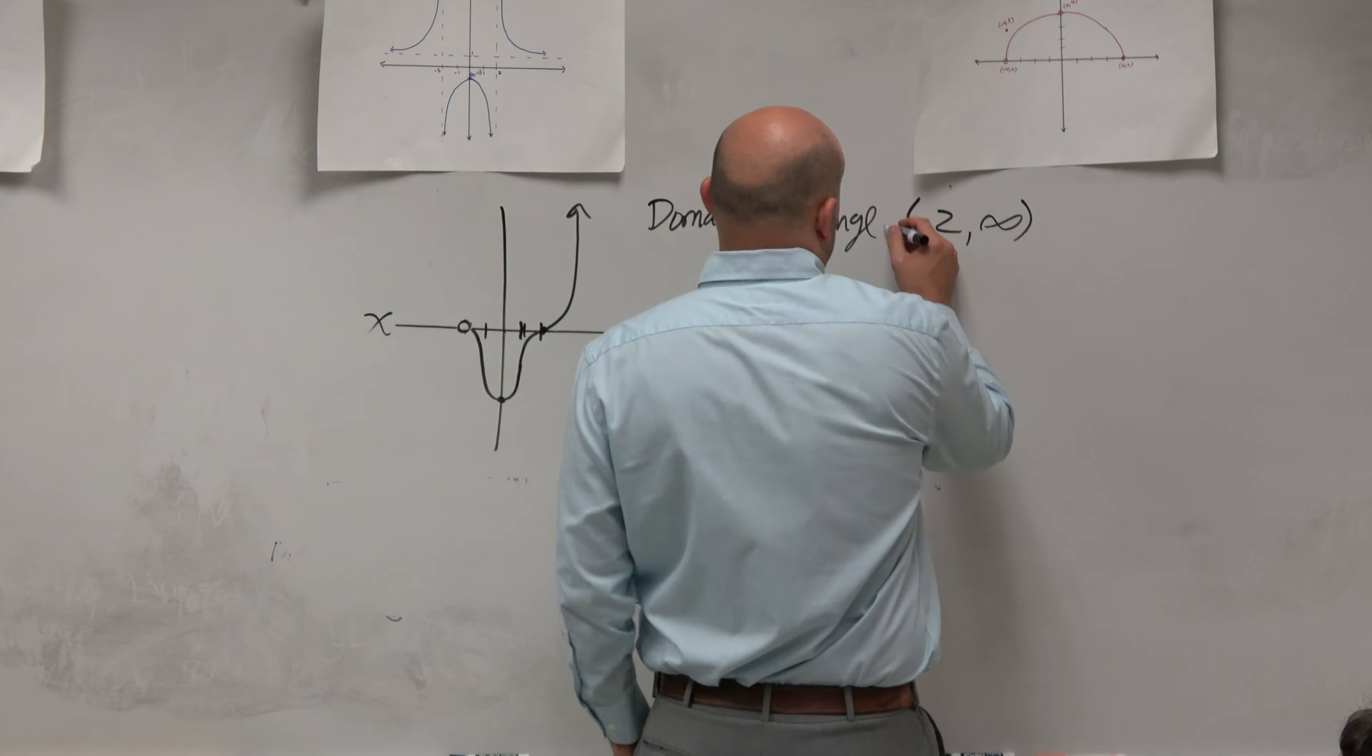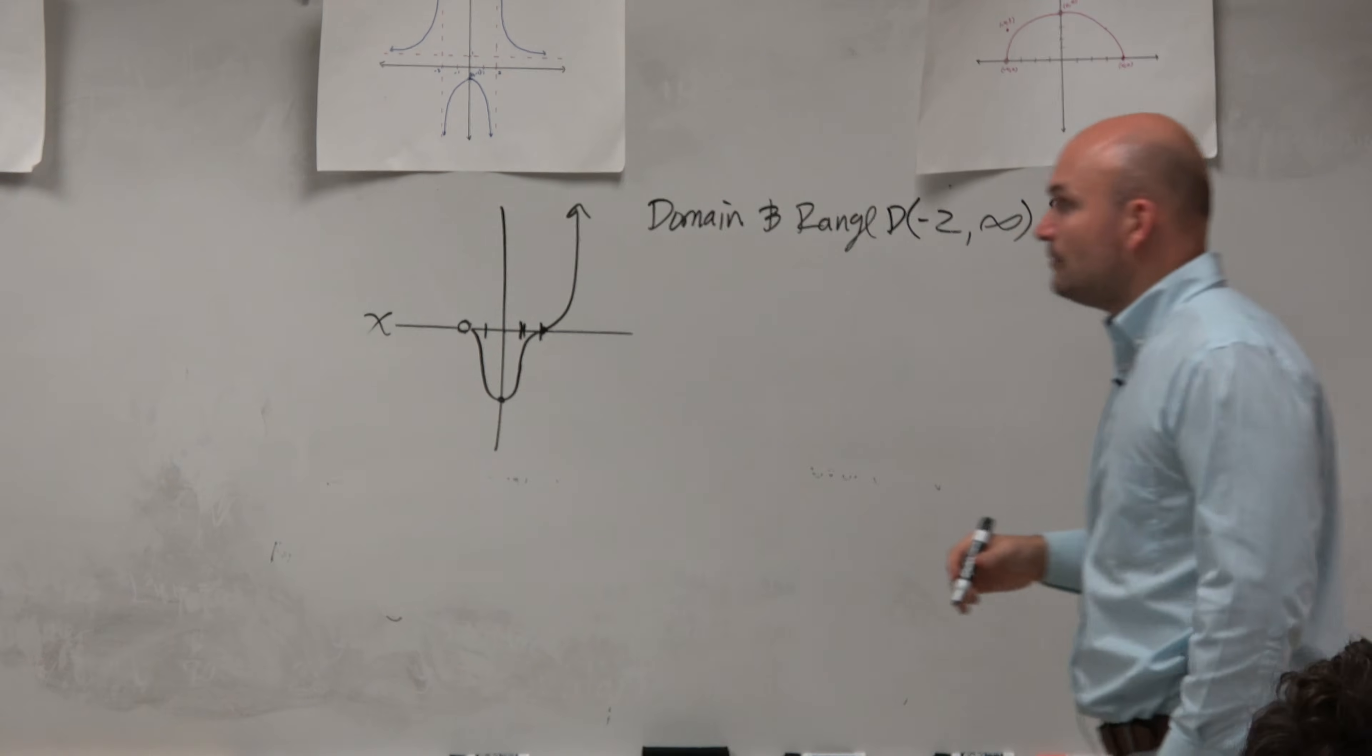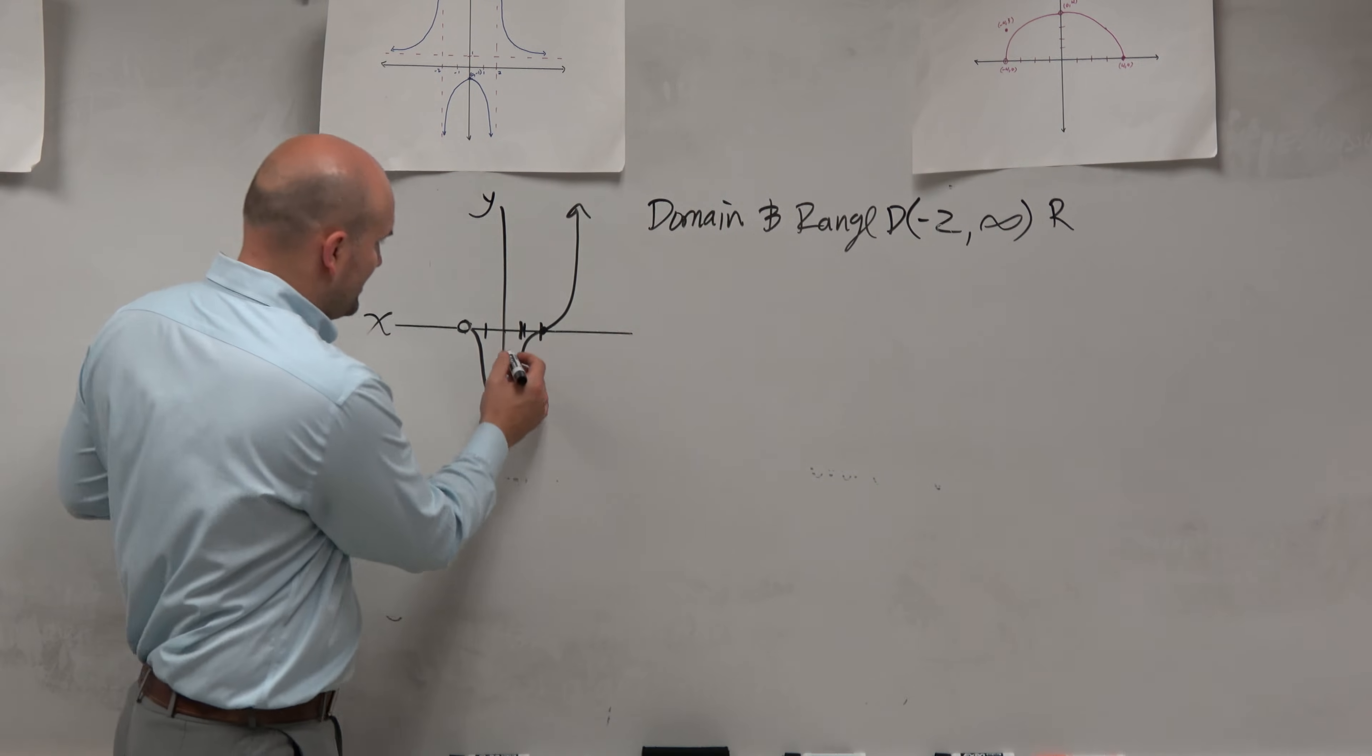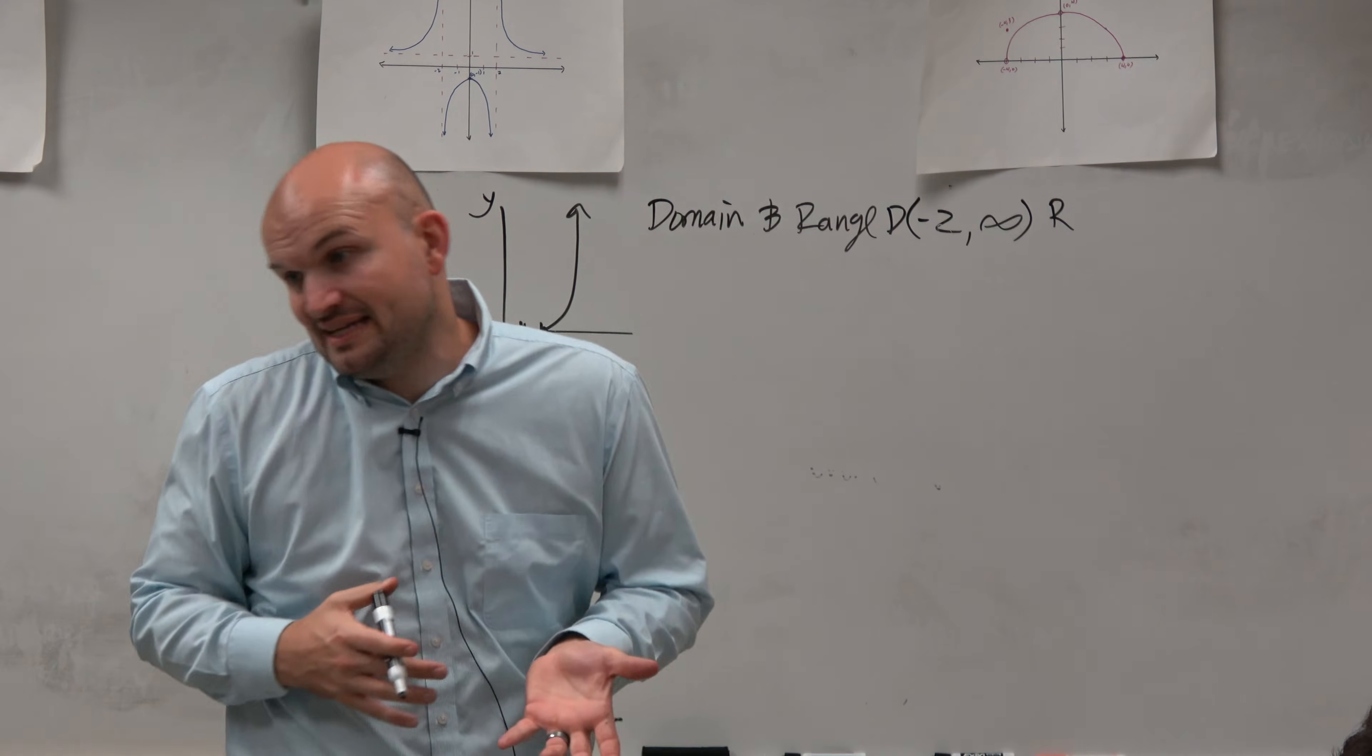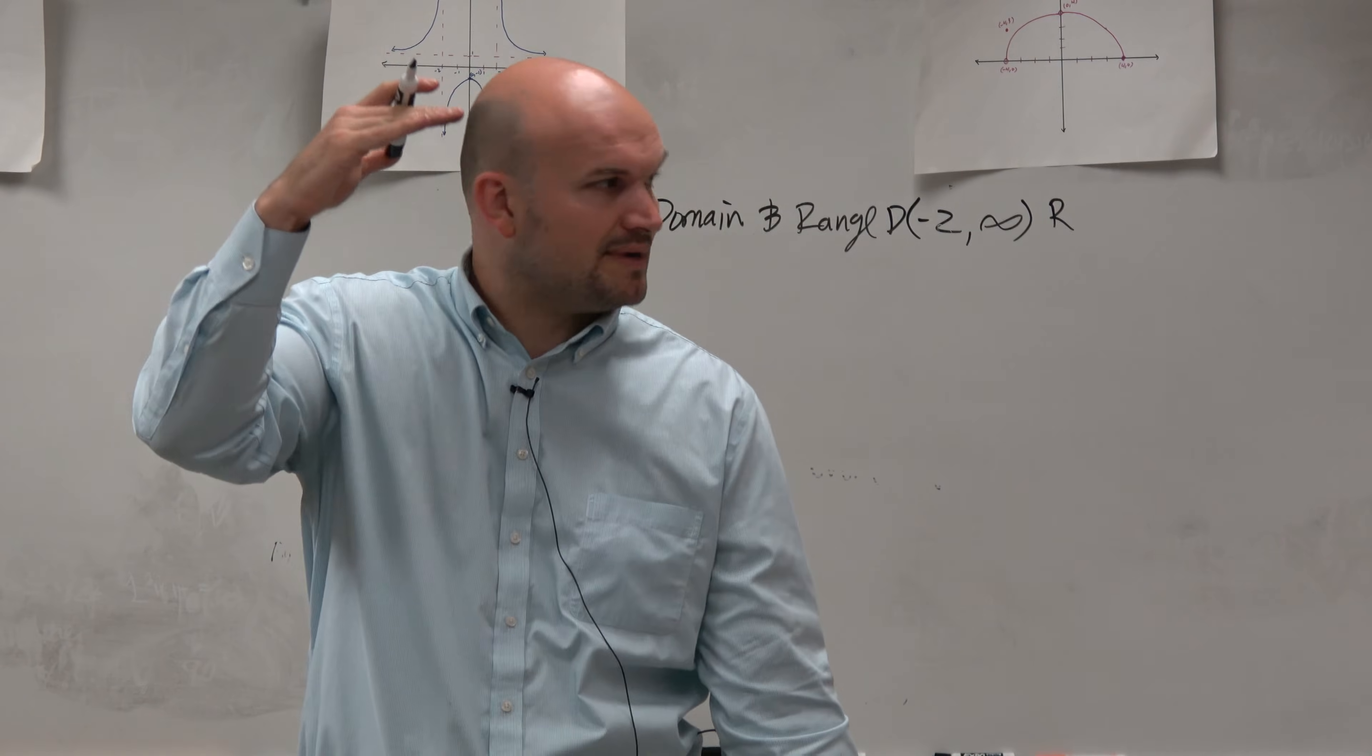When we're looking at the range, sorry, that was the domain. When we're looking at the range, now we're looking at really the set of y values. So we're basically looking at what are all the y values that make up this graph. Now, I didn't really do a good job leaving this one. We'll make that 4. So another way of thinking about that is saying, basically how low is my graph going to go and how high is my graph going to go?